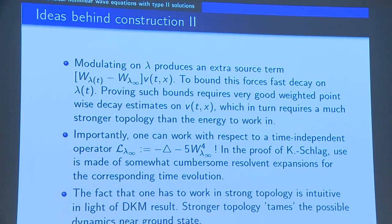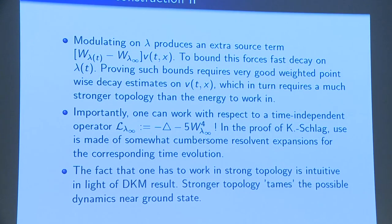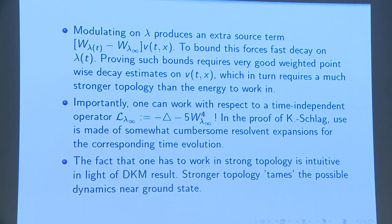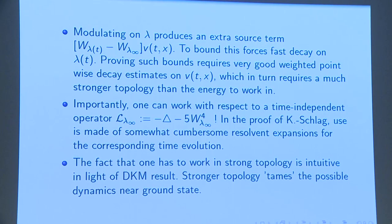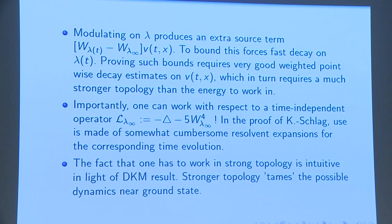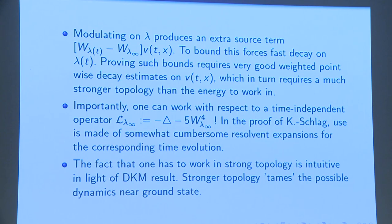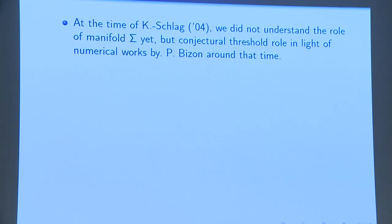We have to work in a very strong topology to avoid the full complexity of possible dynamics coming from Kenig and Merle — Duyckaerts, Kenig, Merle. Somehow we tame the dynamics by working in a sufficiently strong topology near the ground state.